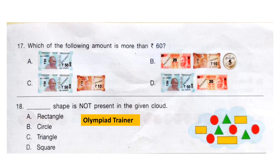Question 18: Which shape is not present in the given cloud? Rectangle is there, circle is there, and triangle is also there. So which is not present? Square is not there. Option D is the correct answer.